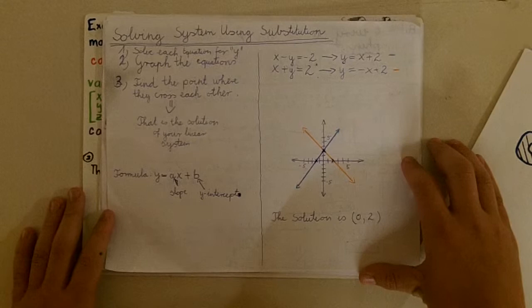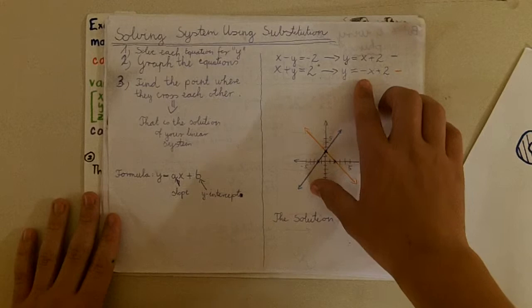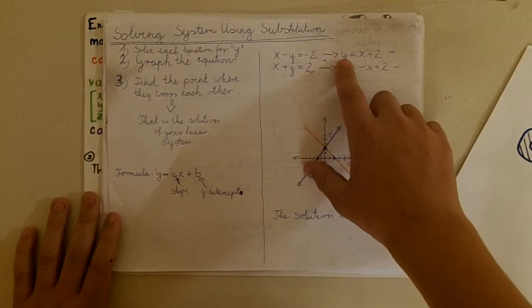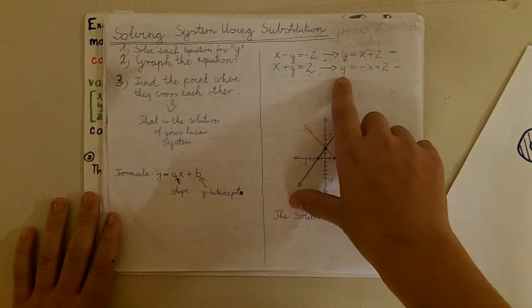Up here you're going to have two equations, and you want to get them both into slope-intercept form so you can graph them easily. So x minus y equals negative 2 translates into y equals x plus 2, and then x plus y equals 2 goes to y equals negative x plus 2.